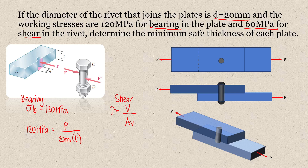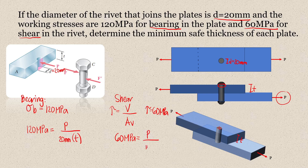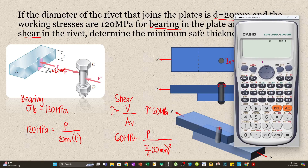For shear stress, we consider the parallel area — the cross-sectional area of the bolt. The shear limitation is 60 MPa, so: 60 MPa = P divided by (π/4 × 20² mm²). Note that the bearing force equals P because we have only one bearing area; if you have two bolts, you will have two bearing areas, and likewise the shear area would be doubled. Solving for P: P = 60 × (π/4) × 20² = 18,849.55 N.